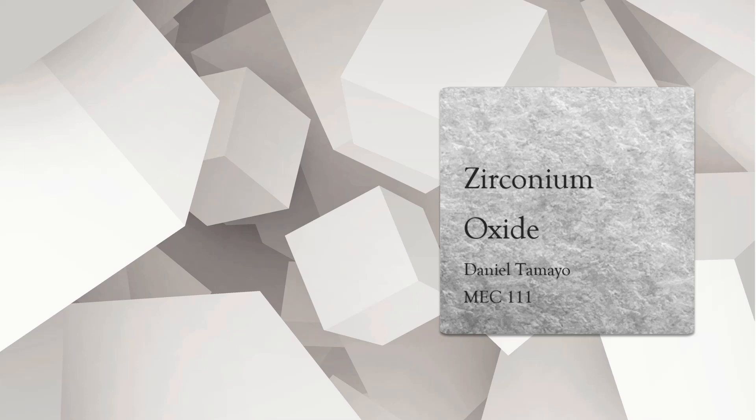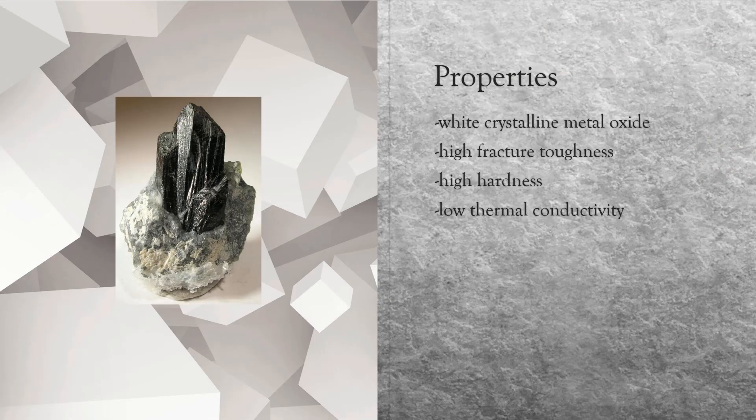This is Daniel Tamayo and I'll be presenting about zirconium oxide. Zirconium oxide is a white crystalline metal oxide used in the production of hard ceramics. Characterized for its high fracture toughness, hardness, and low thermal conductivity, it is also referred to as zirconia and provides a plethora of uses in ceramics.